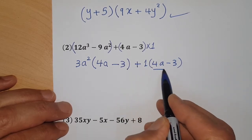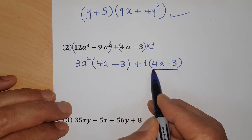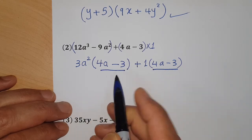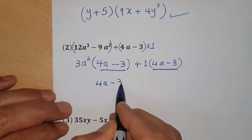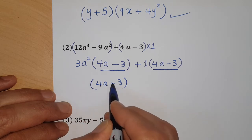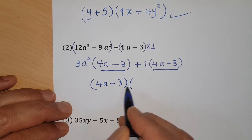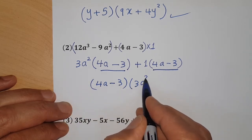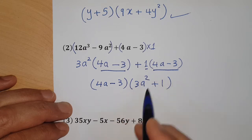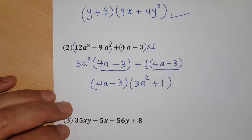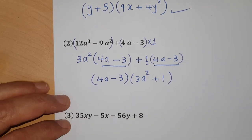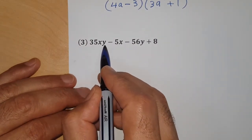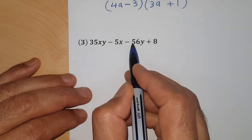The binomial (4a - 3) appears in both groups. Take it outside. The remaining inside the bracket is 3a² + 1. So the factored form is (4a - 3)(3a² + 1). Very easy!